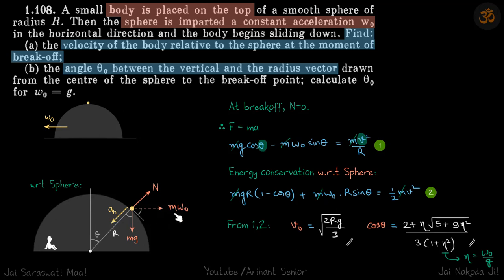Plus work done by the pseudo force, that is m omega naught into this distance, and this distance is r sine theta. So plus m omega naught r sine theta is equal to half mv square, the gain in kinetic energy.